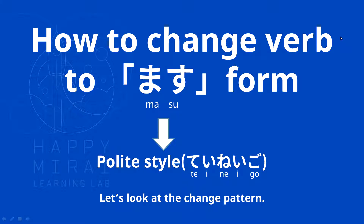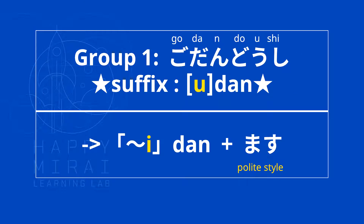First of all, let's quickly review how to change a verb to masu form. Masu form is the polite style — 丁寧語 (teineigo). At the end of the video, I'm going to introduce about 敬語 (keigo). 丁寧語 is a type of keigo. For Group 1, which is the 五段動詞 (godan doushi), as you know, the suffix all ends on u-dan. So we just need to change them to the i-dan where they belong to, and then plus masu. It will become the polite style.